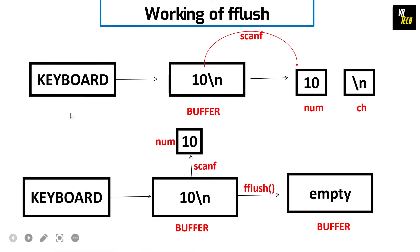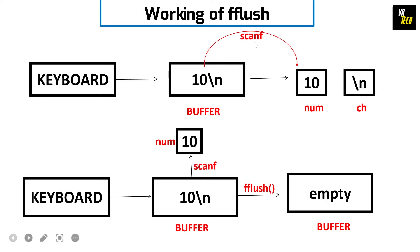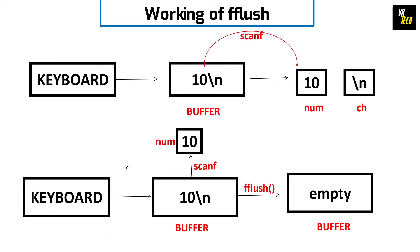Whenever you enter anything from the keyboard it goes to the buffer first. You can think of the buffer as a big array for now. The buffer is a temporary storage which stores the stream of data on a temporary basis, and the work of scanf is to take the data from the buffer and assign it to the variables. So when you input 10, you also hit Enter after the 10, so both values go to the buffer first. When the first scanf is encountered, it takes the first integer value from the buffer, which is 10, and assigns it to the num variable.